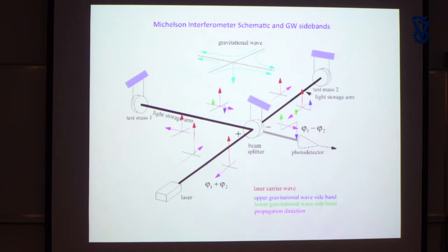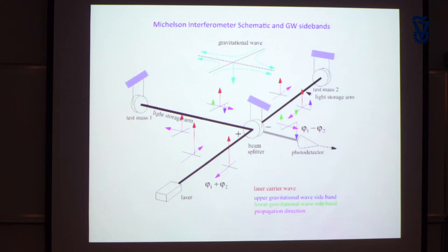The next approach was to do it a different way, which started around the early 1970s when Weber's experiments no longer looked like they were succeeding. This is an interferometer — like a Michelson interferometer. The basic idea: here's a laser, a beam splitter that divides the light — half reflected, half transmitted — and here are the two distant masses from that gravitational wave pattern.